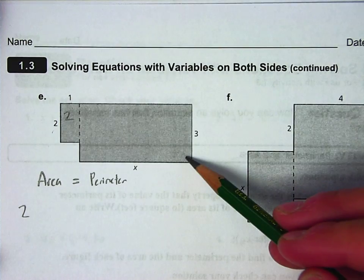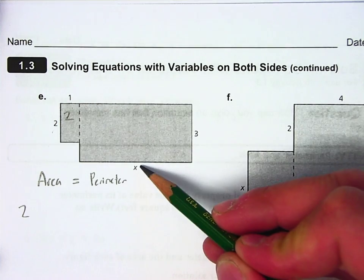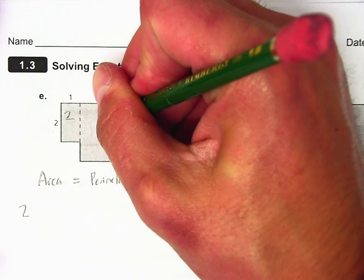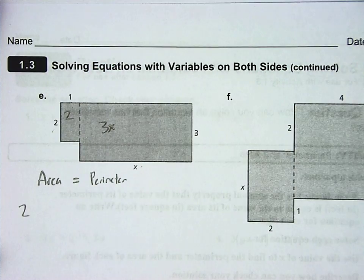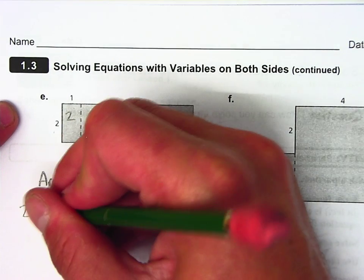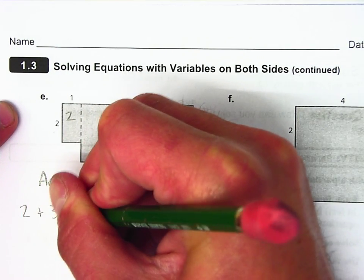The area of this big rectangle, well, 3 times x is 3x. The area of this bigger one is 3x. So the whole area of the composite figure is 2 plus 3x.